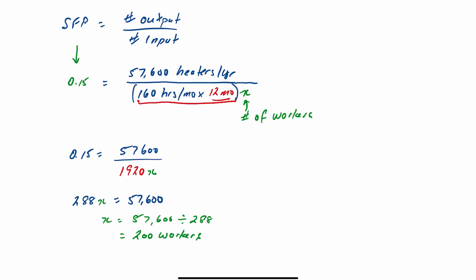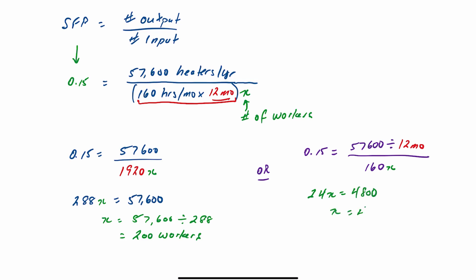You could also base this on the number of months — or alternatively: 0.15 equals 57,600 divided by 12 months, and then take that over 160 hours times the number of workers. In this case we get 24x equal to 57,600 divided by 12, which equals 4,800. So x equals 4,800 divided by 24, which also equals 200 workers.